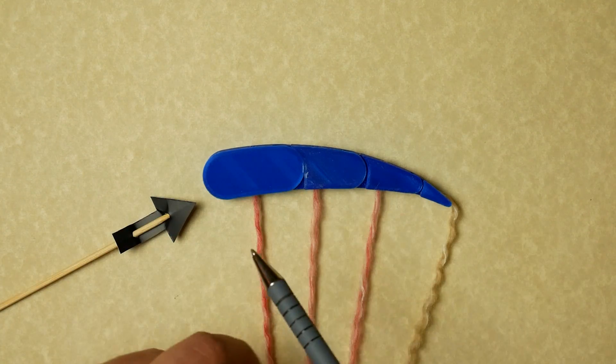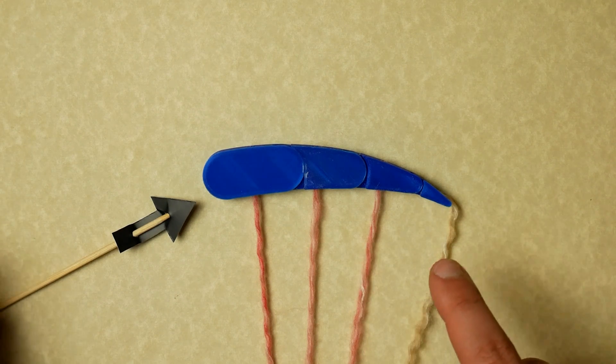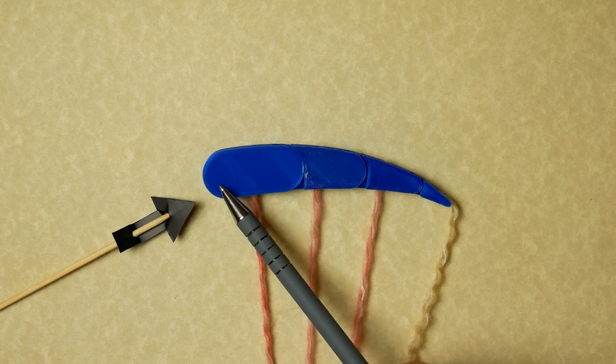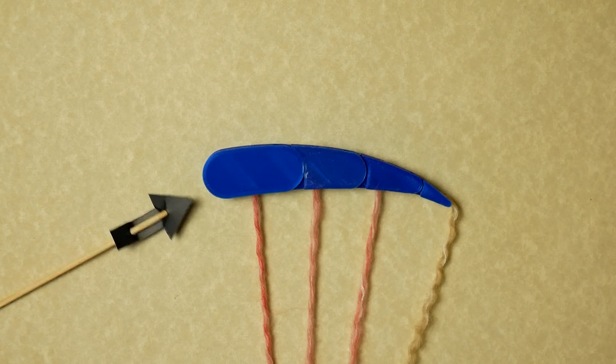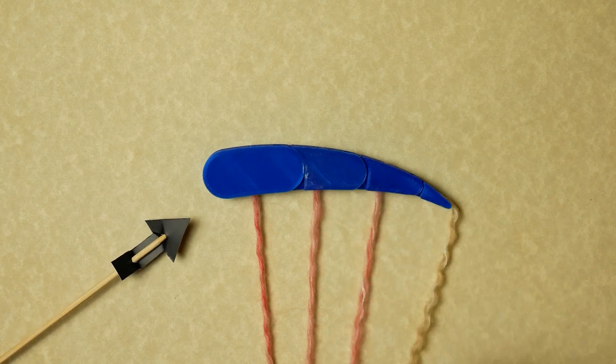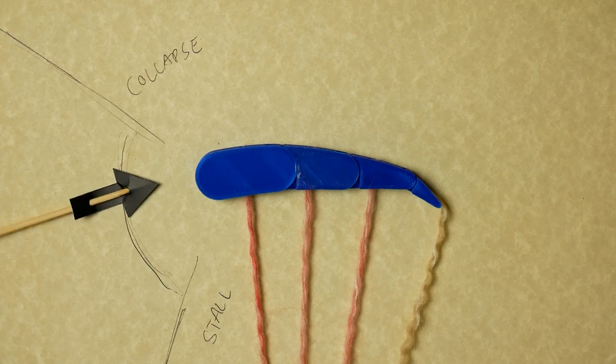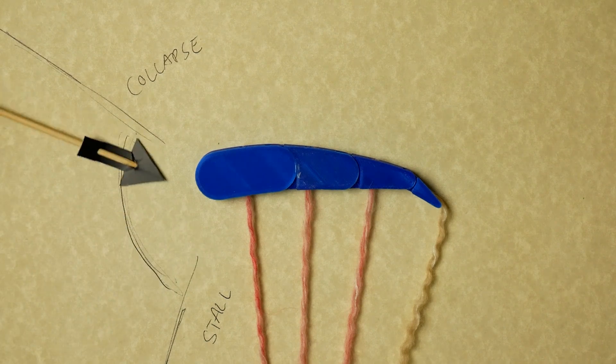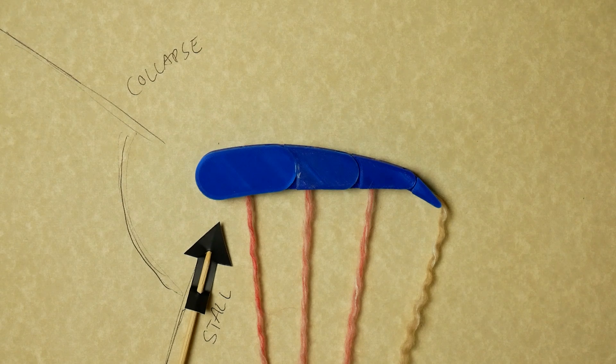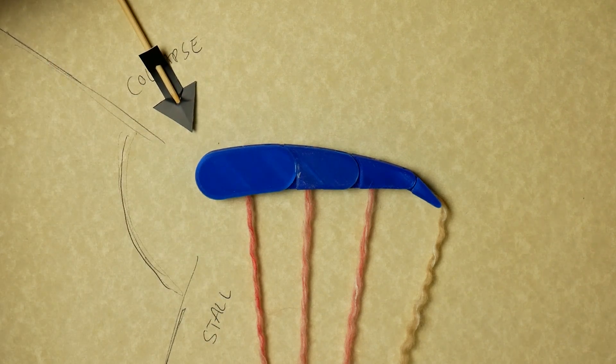The problem with these is, even with sharknose technology here on the leading edge, there's only a certain range of angles that it will work and keep pressurized. So that means we have a certain window of airflow direction in which the paraglider can operate. If we go too far one way, we have a stall. If we go too far the other way, we have a collapse.